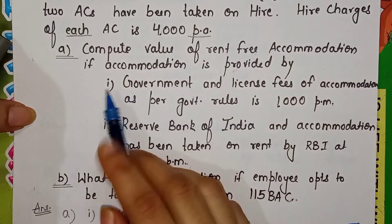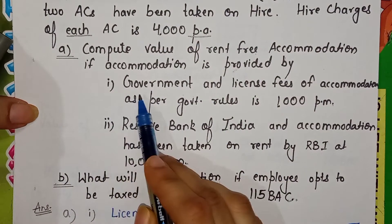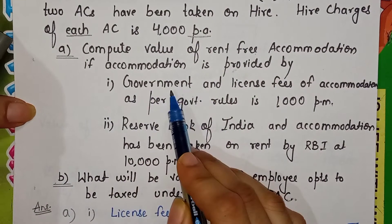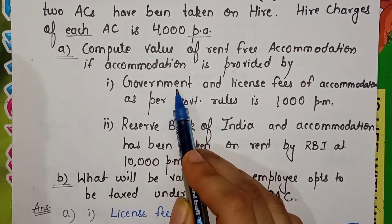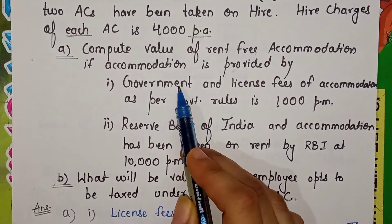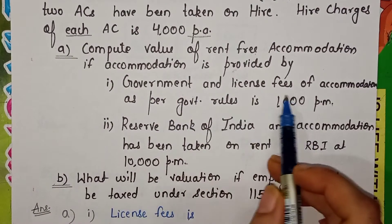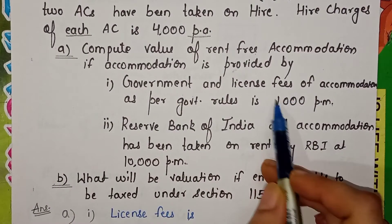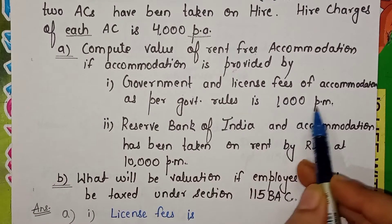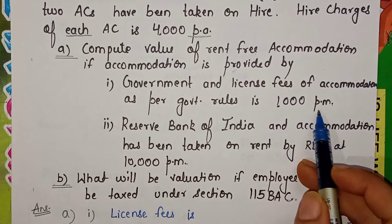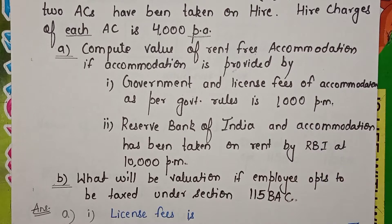Part A says the accommodation is provided by the government to its employees, and according to government rules the license fee of the accommodation is 1,000 per month.